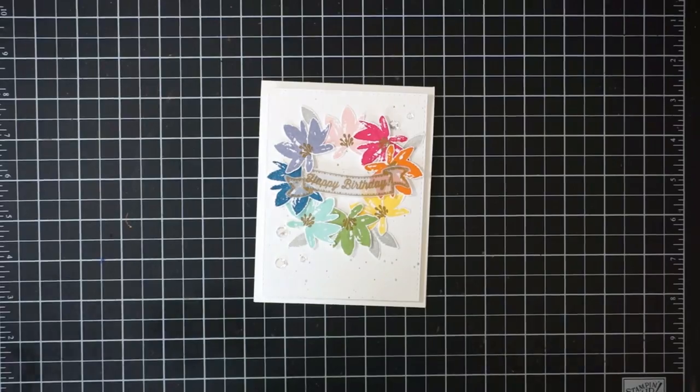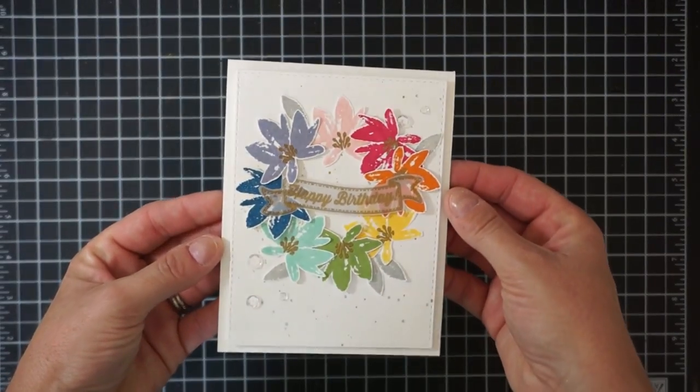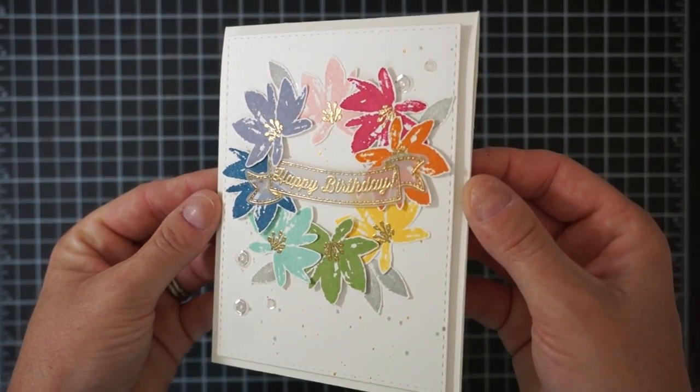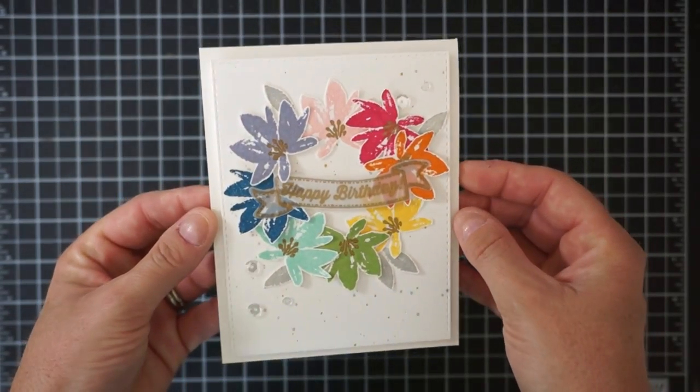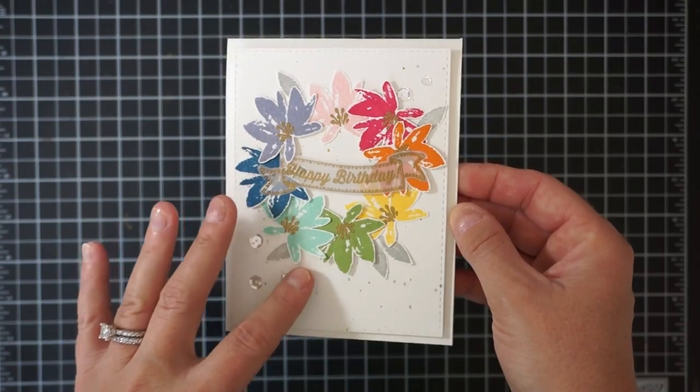Hey there stampers, Christy here from The Stamp Cycle. Welcome to another video from my YouTube channel and blog. Today's card features making this rainbow wreath using a flower image from the 2017 Stampin' Up Celebration catalog stamp set Avant-Garde.